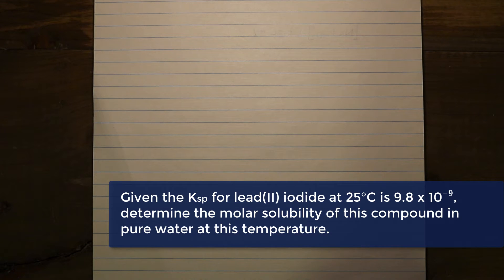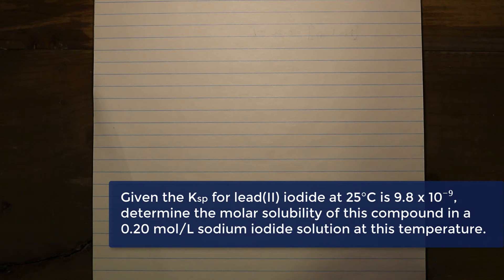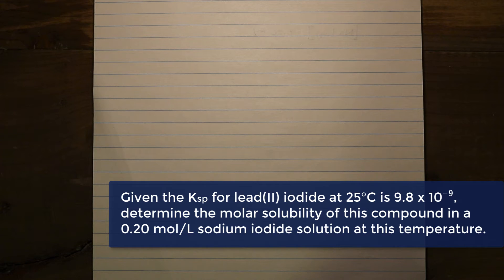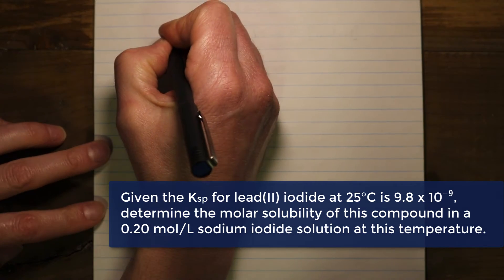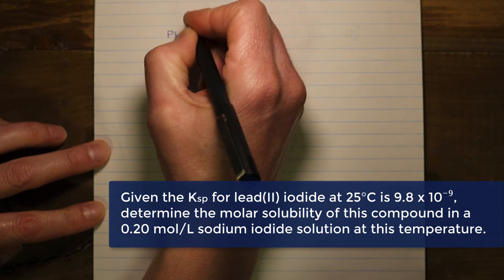Now let's consider a different scenario — one in which this is no longer pure water, but instead a solution containing an ion that is already present in the salt we're trying to dissolve. Specifically, we'll look at the molar solubility of lead(II) iodide when it dissolves in a solution that already contains 0.20 moles per liter of sodium iodide.